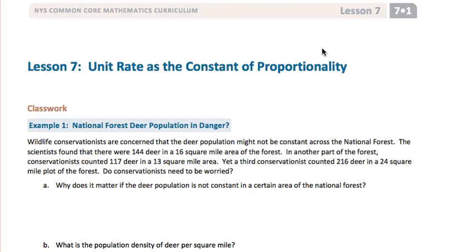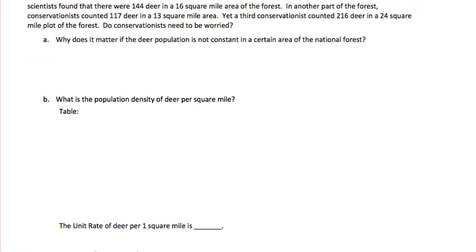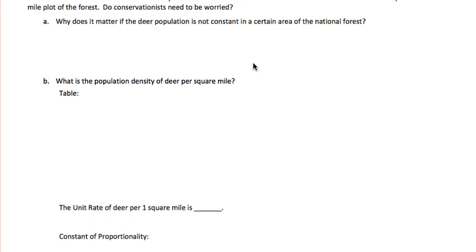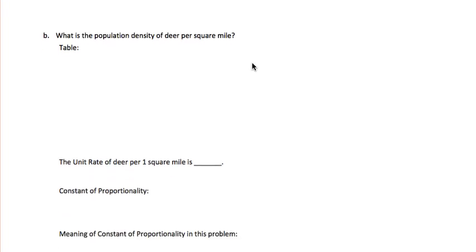We'll look at those three ratios to see if they are proportional, to determine whether there should be a reason for concern. We'll leave Part A for you to consider on your own why it would matter that the deer population is not constant, and we'll focus on the math. Part B asks for the population density of deer per square mile, so we're going to create a table using those three ratios.